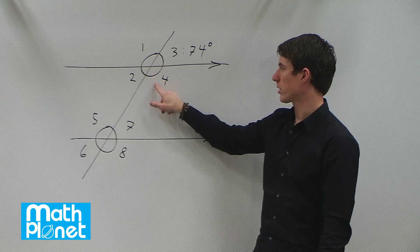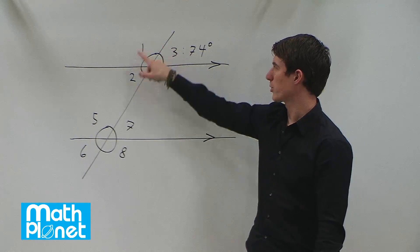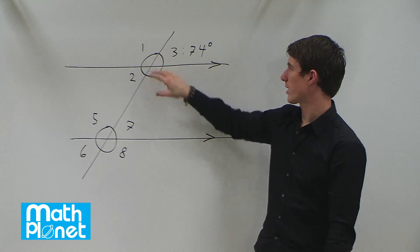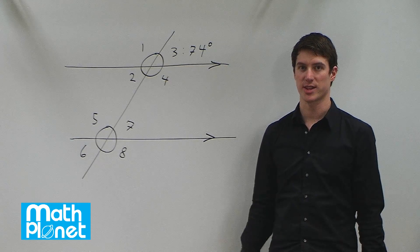To determine angles 1 and 4, which are also going to be equal, we have to see what the total sum is here and then figure out what's left. The total sum of angles here is 360 degrees.